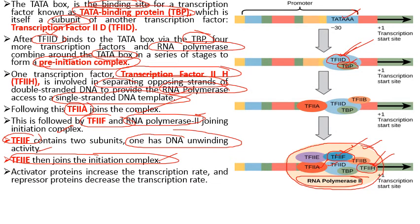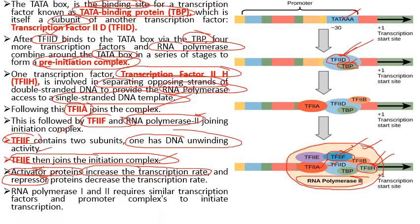There are some proteins that help increase the rate of transcription, known as activator proteins, and other proteins that inhibit or decrease the rate of transcription, known as repressors. RNA polymerase 1 and 2 require similar transcription factors and promoter complexes to initiate transcription.